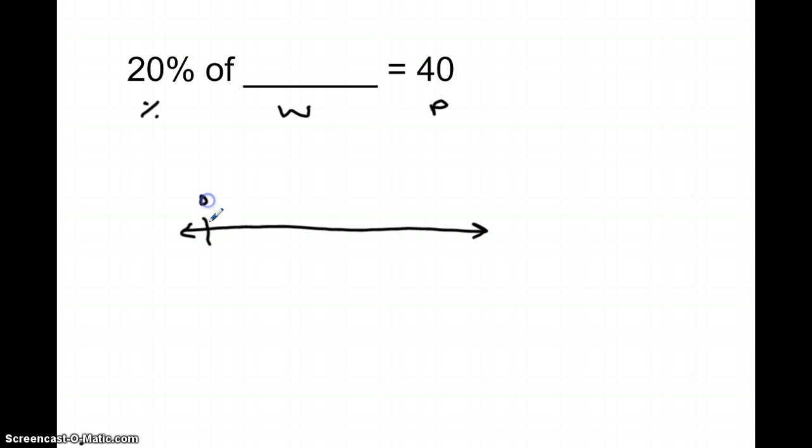We'll put our zeros on here, and we're going to put our 100 here. This is our percents, and this is our number, and our dollars. We know that 20% is 40. So on my number line, I'm putting together 20% is 40, the number.